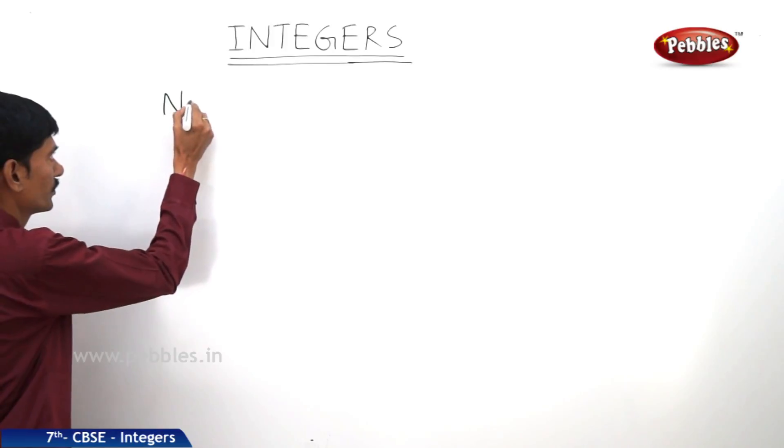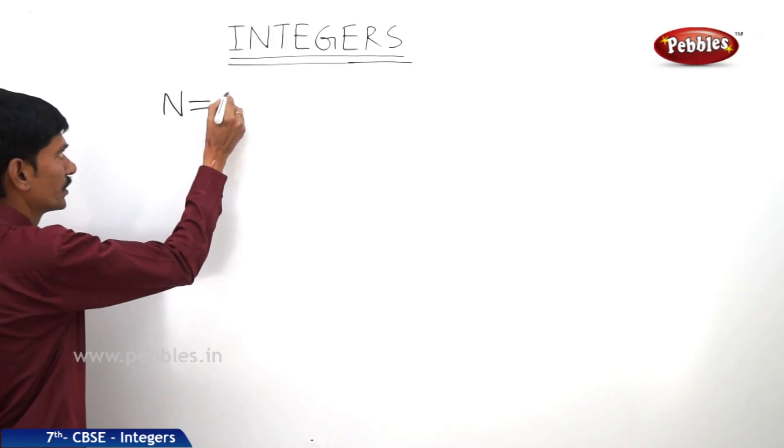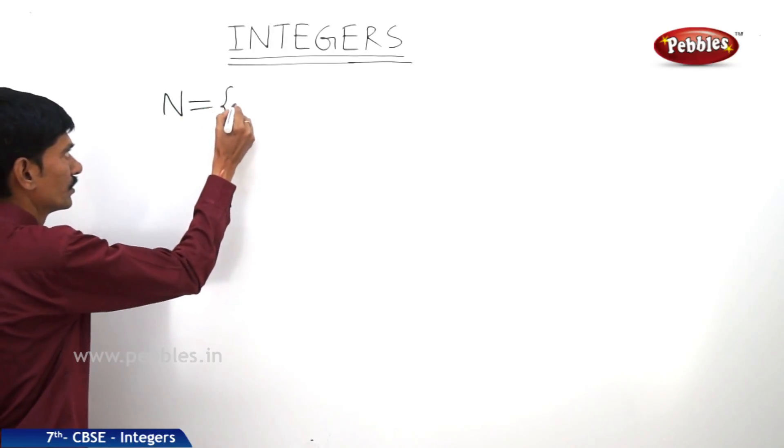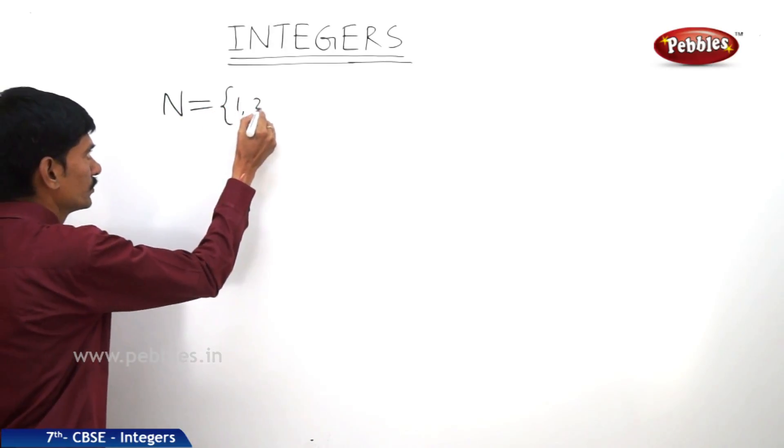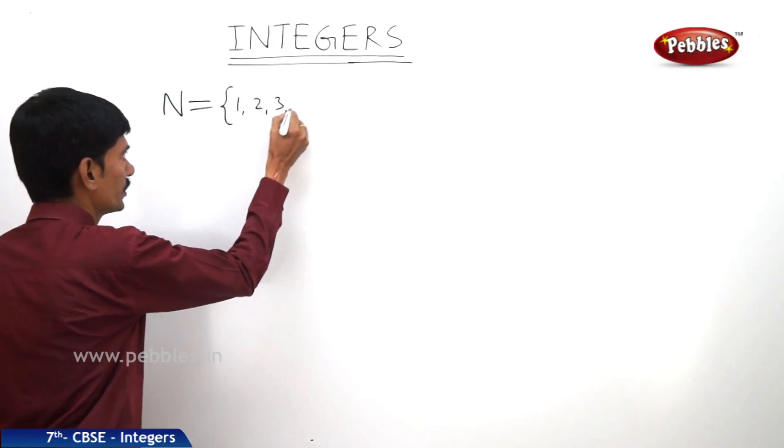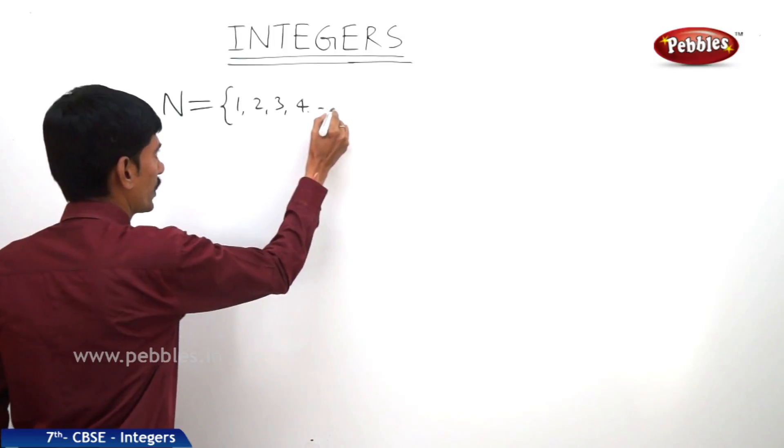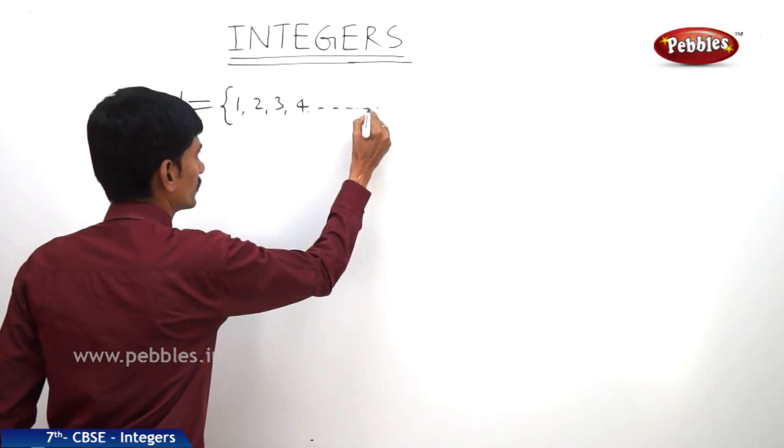The set of natural numbers is denoted by N: {1, 2, 3, 4, and so on}.